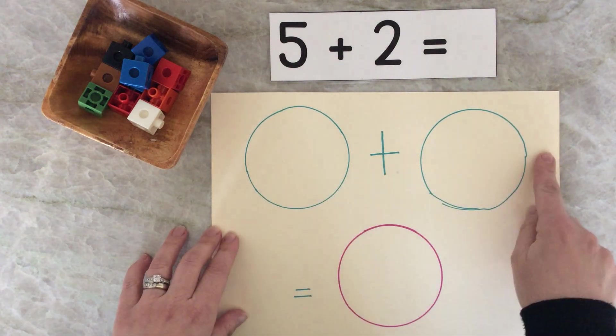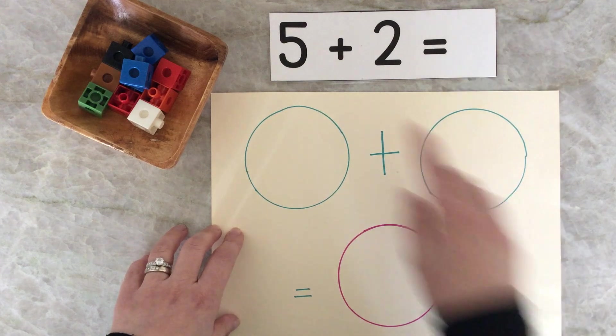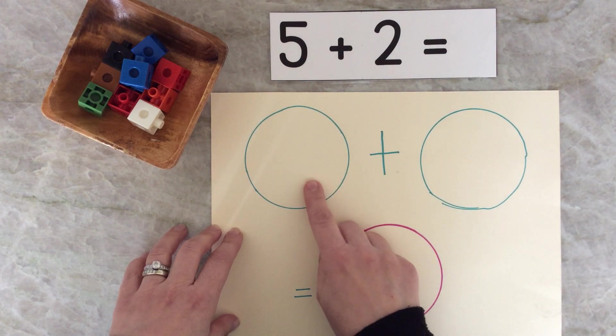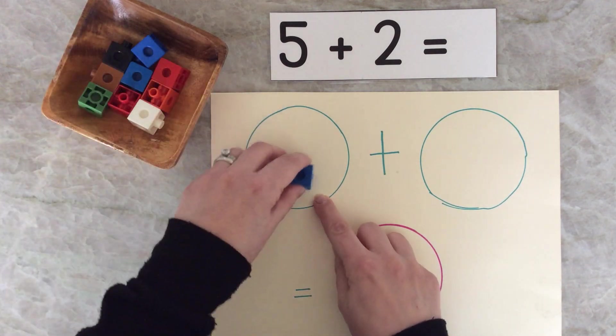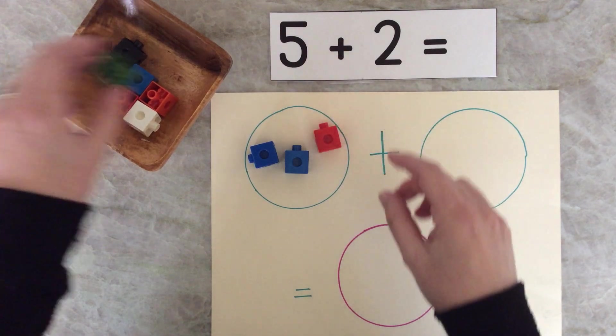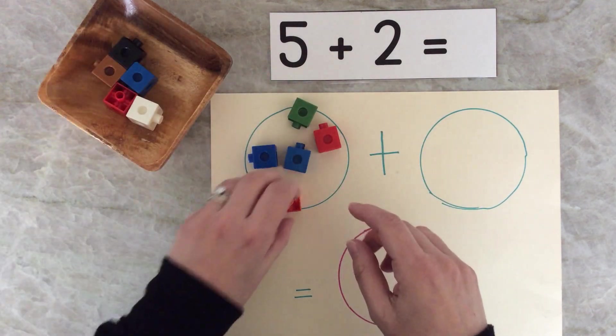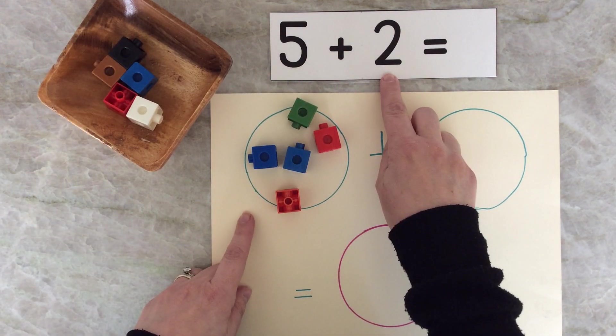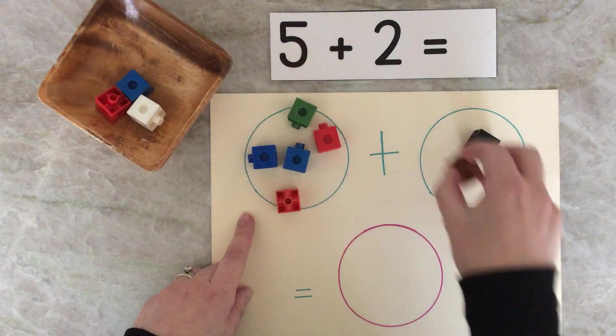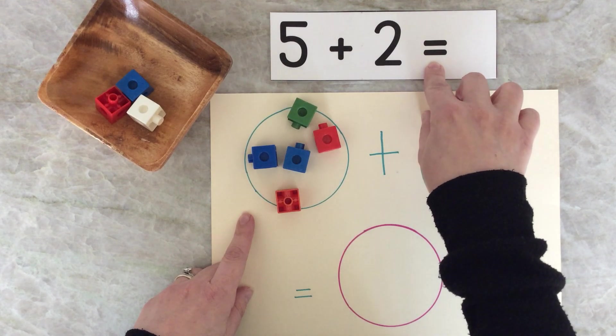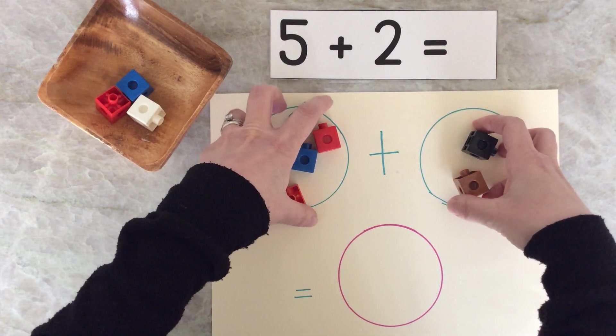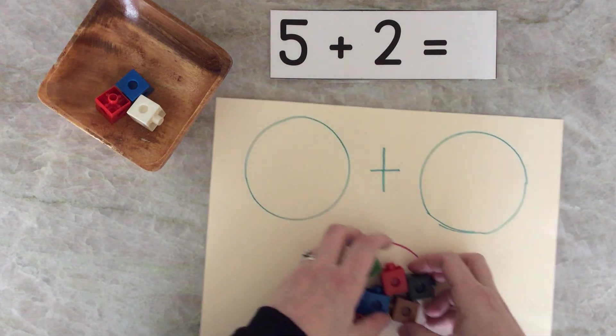Watch how I use my mat to figure this out. Five is the first number that I see. I'm going to put five in this green circle at the top. One, two, three, four, five. The next number is two. I'm going to put two in this circle. One, two. And when I say the magic word equals, I'm going to move all of these counters to the bottom.